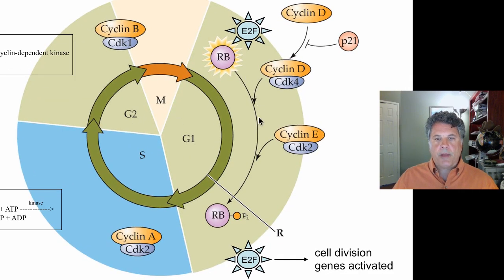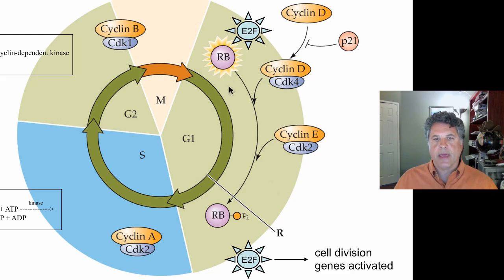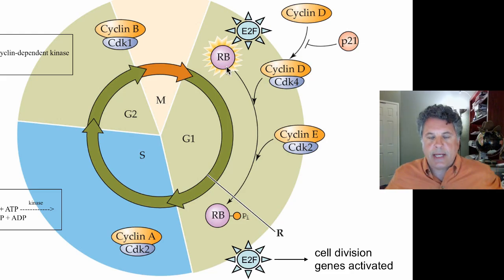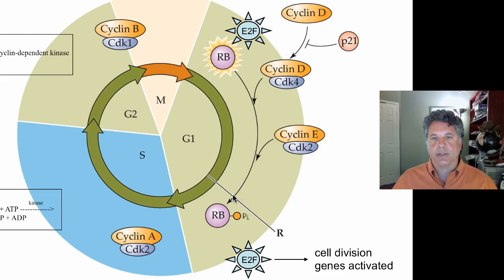Returning to our schematic of this process and re-emphasizing the important fact that the inactive retinoblastoma protein allows progression through the restriction point. Now if a cell is arrested because of active retinoblastoma protein, in some cases that is a natural state of the cell because the cells aren't dividing anymore, and therefore we don't want to move past this restriction point. The cell does not want to inactivate retinoblastoma.